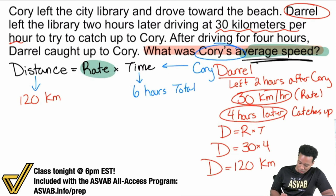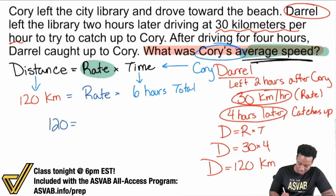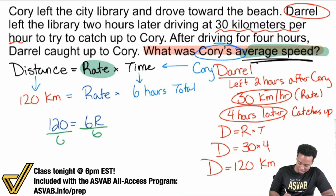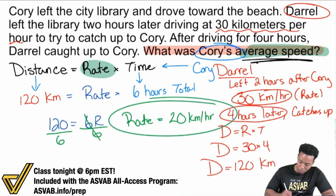We are now able to fill this in: 120 equals rate times 6 hours total. We can rewrite this as 120 equals 6R, divide both sides by 6, and that rate for Corey will be 120 divided by 6, which gives us 20 kilometers per hour.